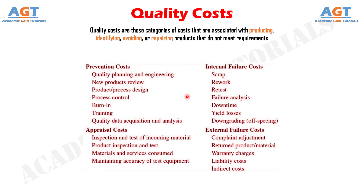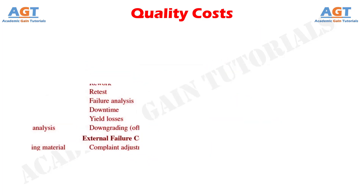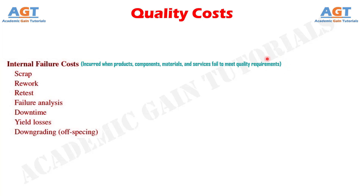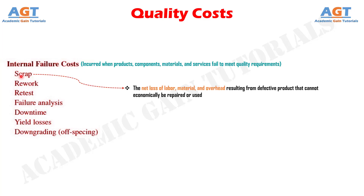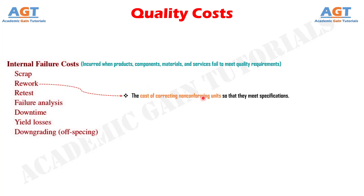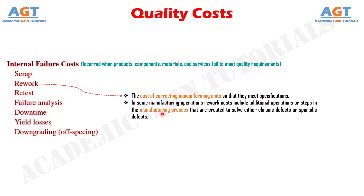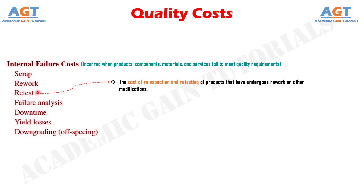After appraisal costs, we shall discuss internal failure costs. Internal failure costs are incurred when products, components, materials, and services fail to meet quality requirements, and this failure is discovered prior to delivery of the product to the customer. These costs would disappear if there were no defects in the product. The major subcategories include: Number 1, scrap — the net loss of labor, material, and overhead resulting from defective product that cannot economically be repaired or used. Number 2, rework — the cost of correcting non-conforming units so that they meet specifications, including additional operations or steps in the manufacturing process created to solve chronic or sporadic defects. Number 3, retest — the cost of reinspection and retesting of products that have undergone rework or other modifications.